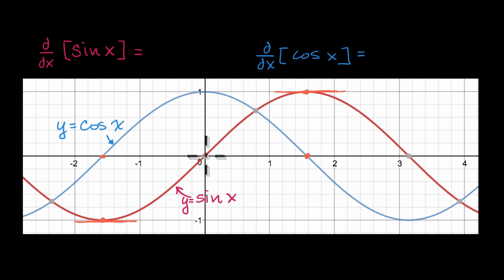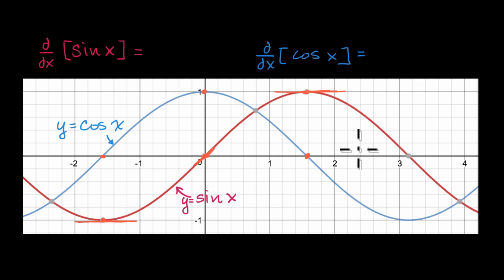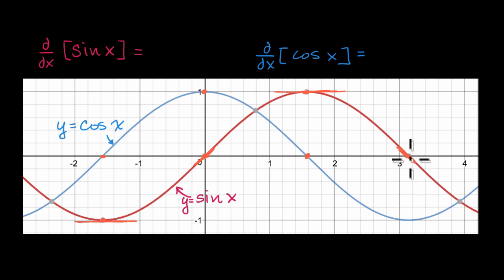If we look right over here on sine of x, it looks like the slope of the tangent line would be pretty close to one. If that is the case, then in our derivative function, when x is equal to zero, that derivative function should be equal to one. Similarly, over here, it looks like the slope of the tangent line is negative one, which tells us that the derivative function should be hitting the value of negative one at that x value.